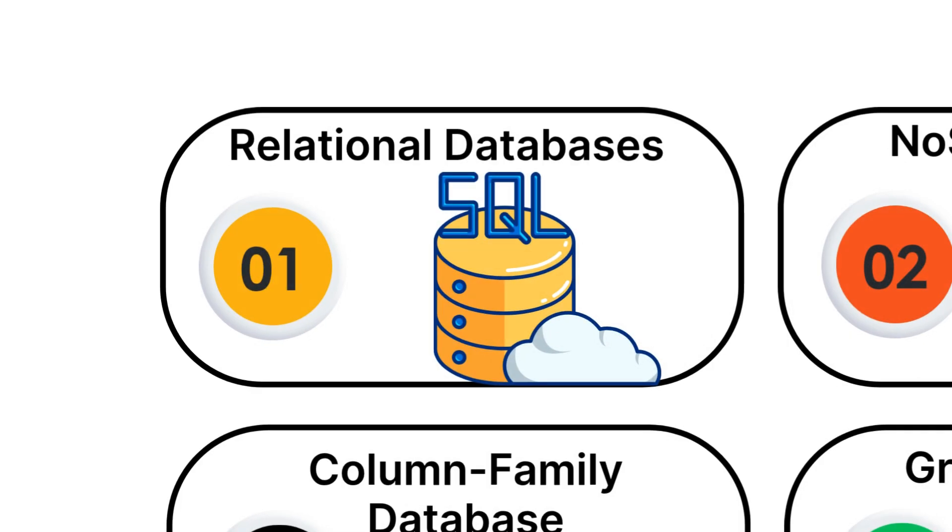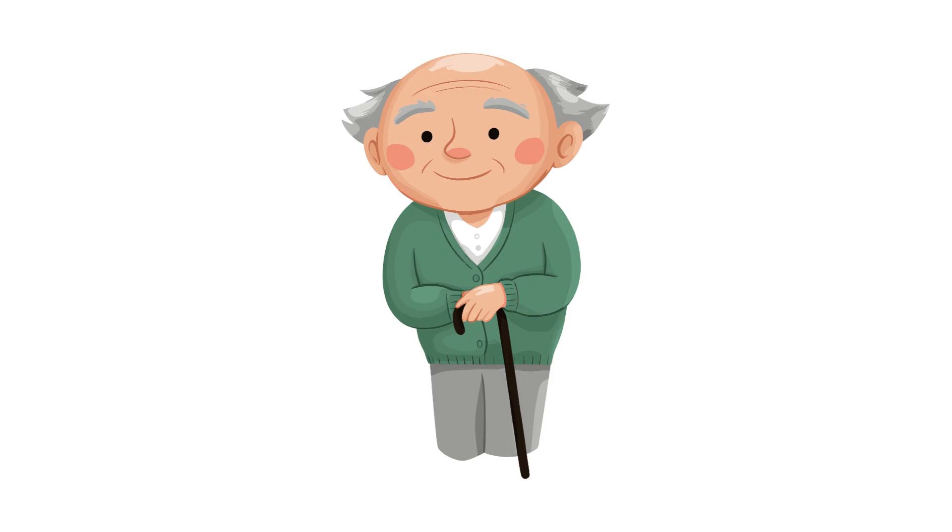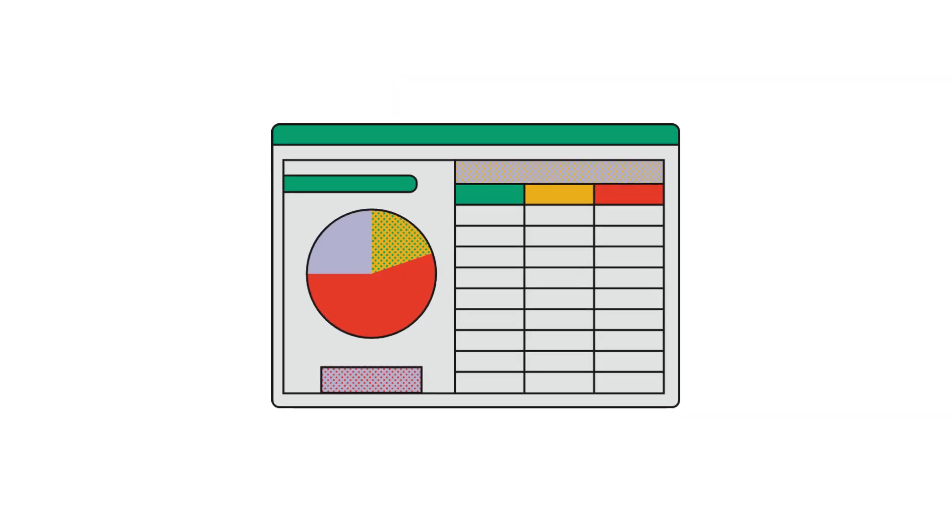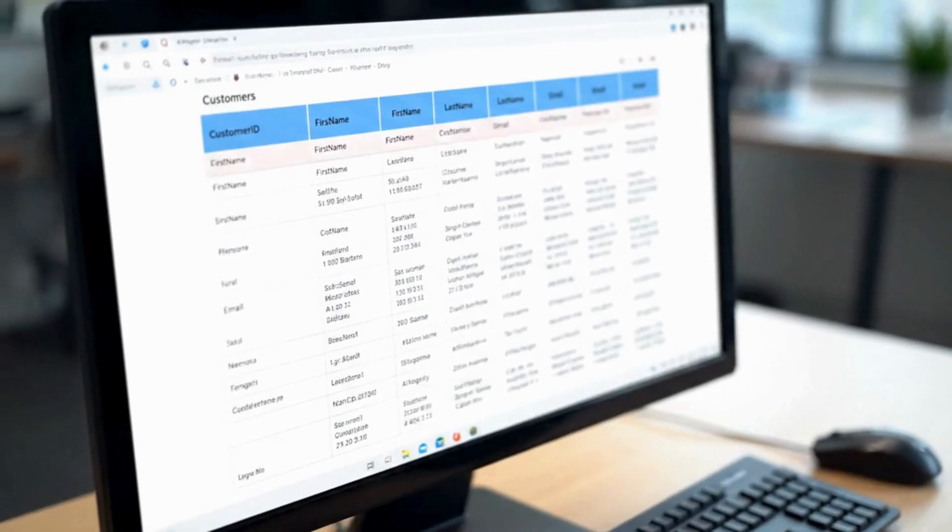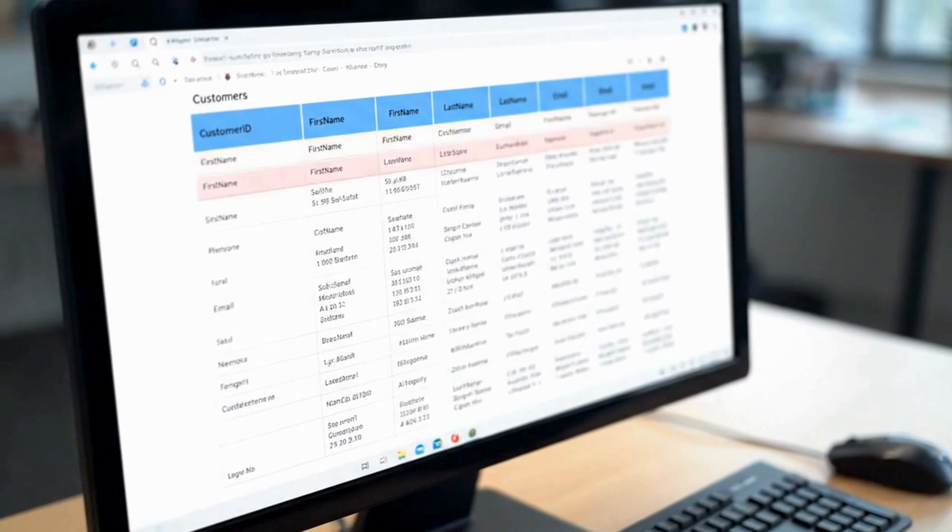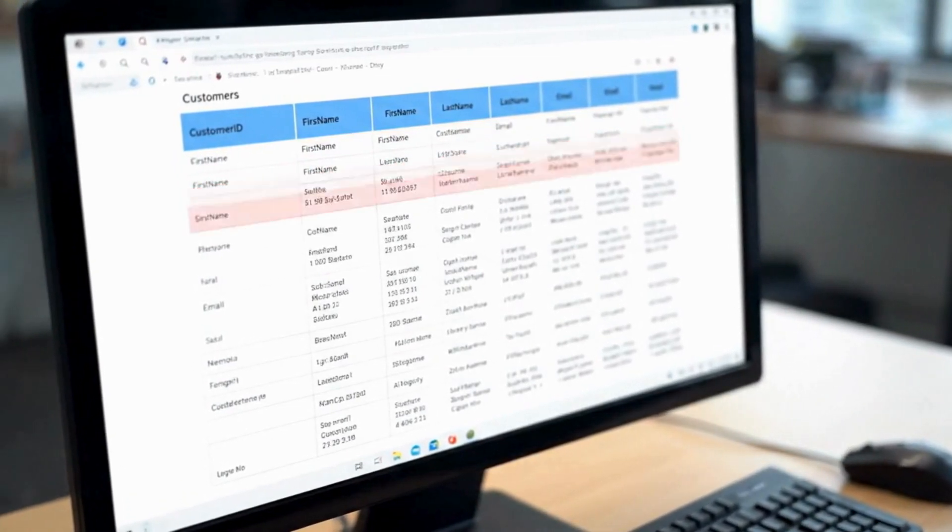Number one, relational databases. Let's start with relational databases. These are like the granddaddy of all databases. Think of them as Excel spreadsheets, but much more powerful and organized. In a relational database, information is stored in tables with rows and columns.